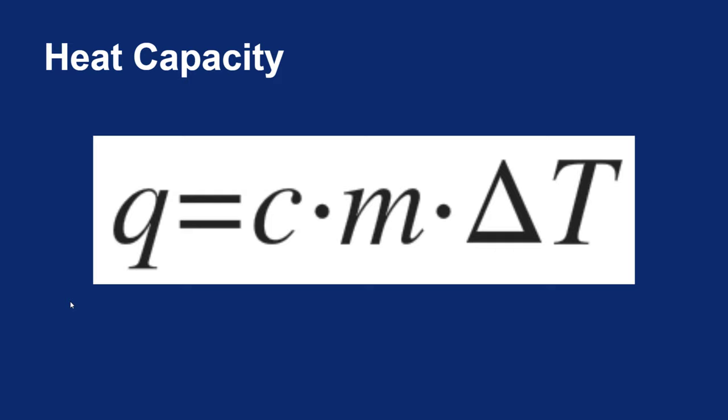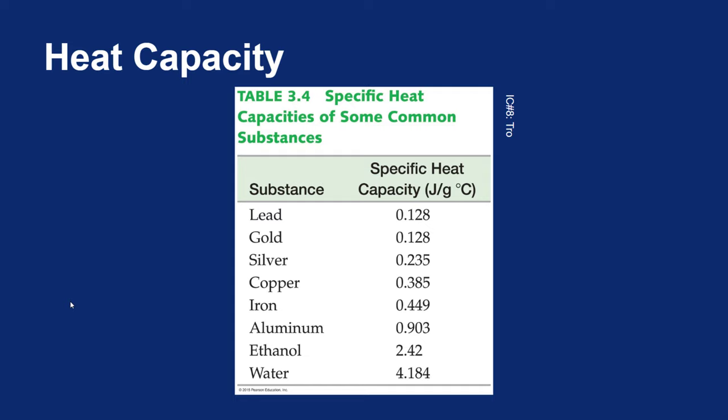Now 4.184 only works if we're dealing with liquid water, and all the problems we've done in this chapter have been with liquid water. If you take a look at table 3.4 in the text, you'll see that different substances have different specific heat capacities. The units are still joules per gram degree Celsius, but metals have very low specific heat capacities — they heat up very quickly and change temperature very rapidly, which is a property of metal. Ethanol and water, however, have much higher specific heat capacities; it takes much more energy to change the temperature of those liquids. This is a limited list — if you do a quick Google search, you'll get a long list of specific heat capacities of all sorts of substances.